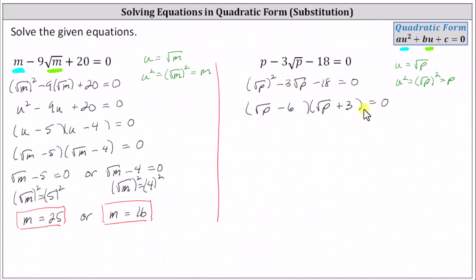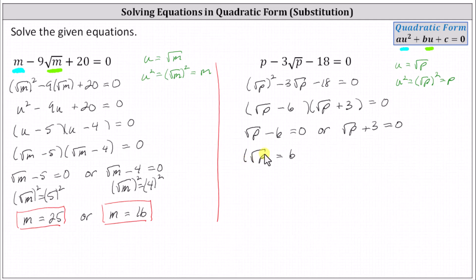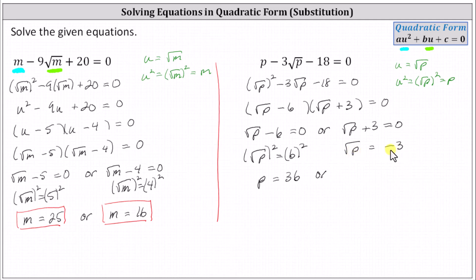Because the product on the left must equal zero, we have the square root of p minus six must equal zero, or the square root of p plus three must equal zero. For the first equation, we add six to both sides, which gives us the square root of p equals six, and then we square both sides, giving us p equals 36. For the second equation, we subtract three on both sides, giving us the square root of p equals negative three. We need to be careful here — this is the principal square root of p, meaning the positive square root of p, which is never going to equal negative three. Therefore the second factor does not give us a second solution.